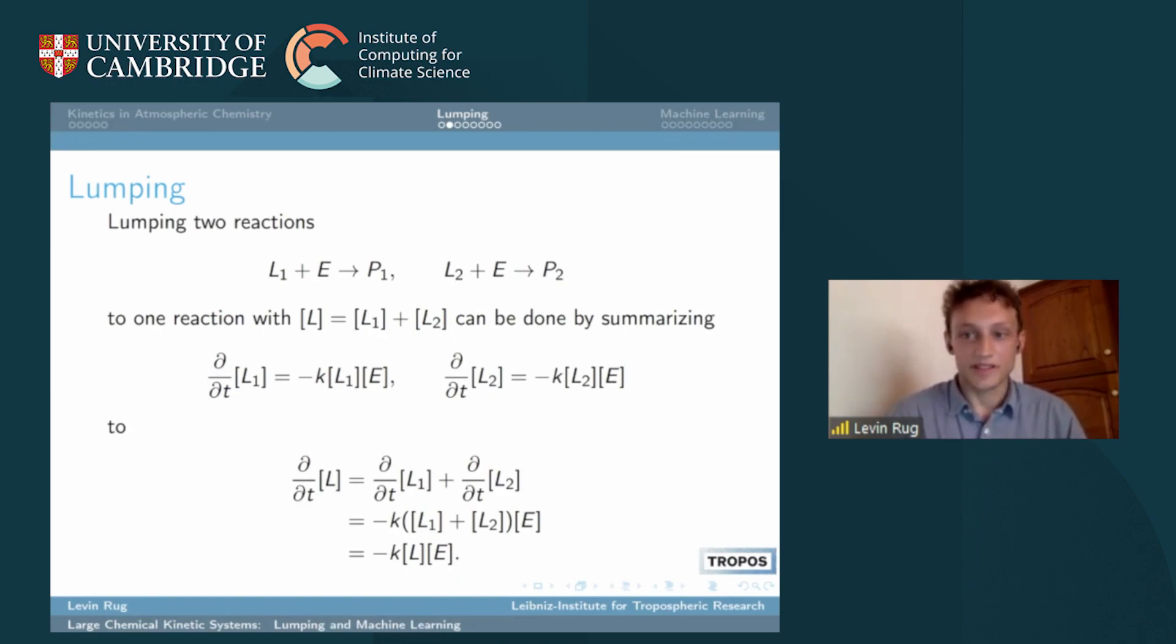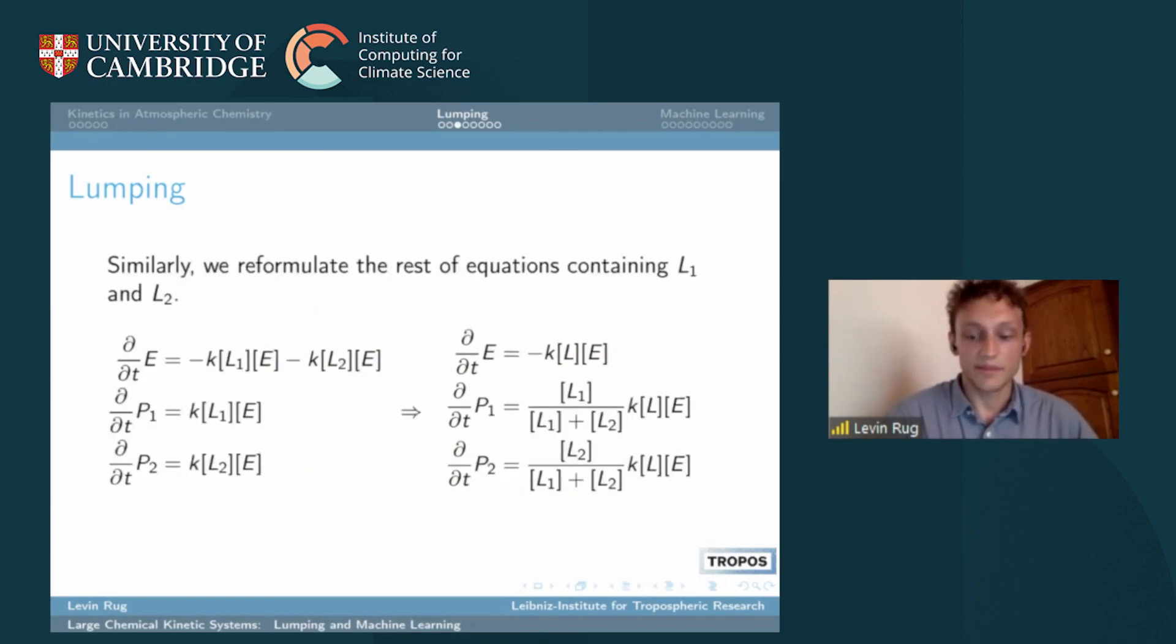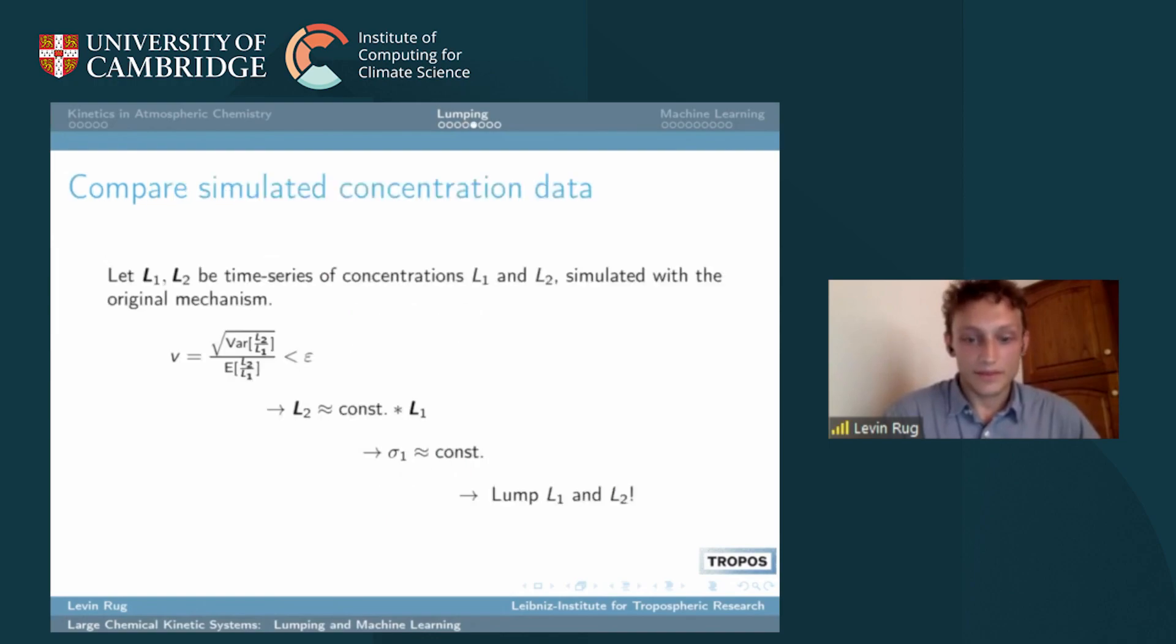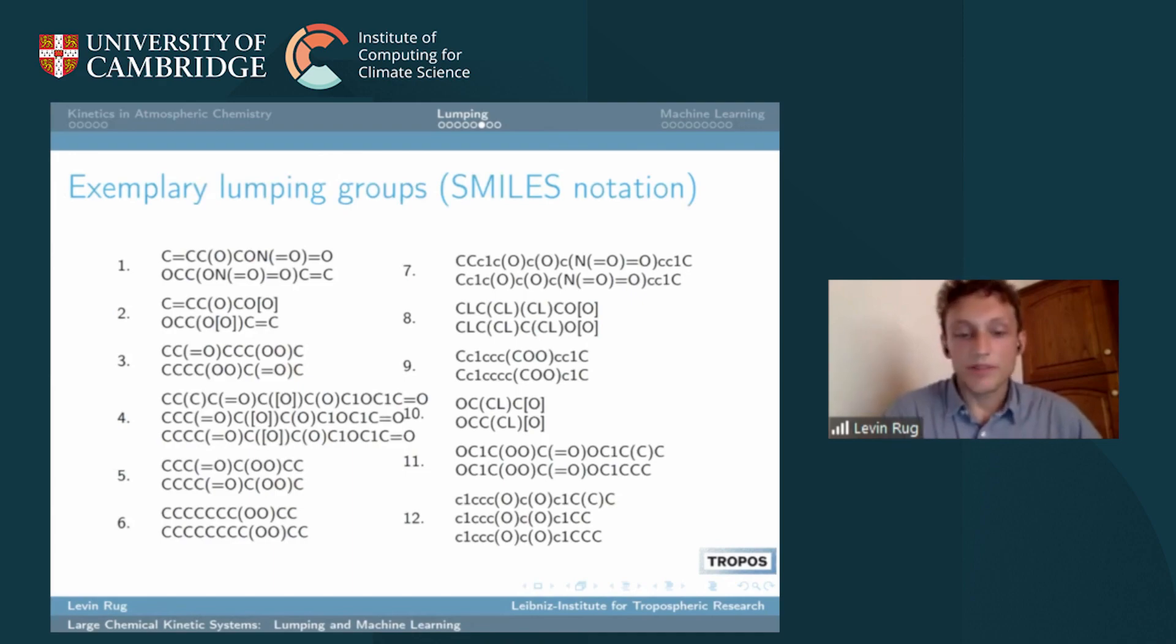We have to search for chemically coherent lumping species. When we do it and some criteria are fulfilled, then we can lump these species. The lumping groups in this master chemical mechanism will look something like this, so it is able to find very similar looking chemical compounds.